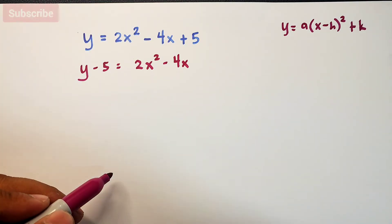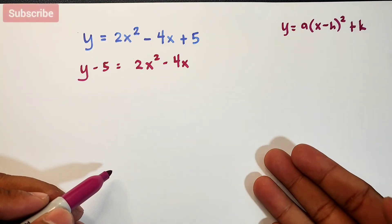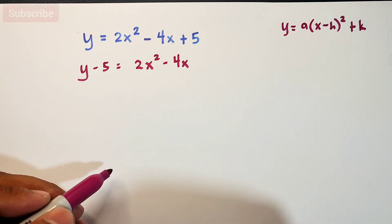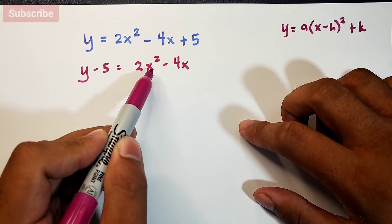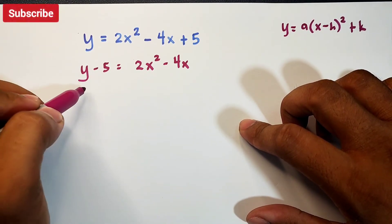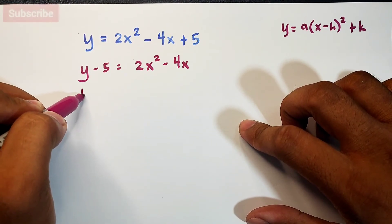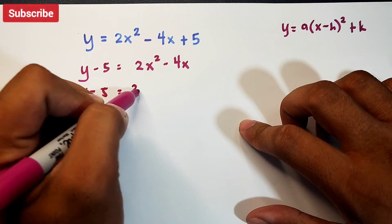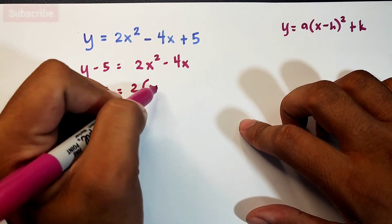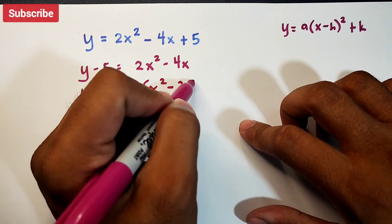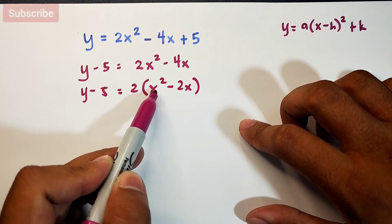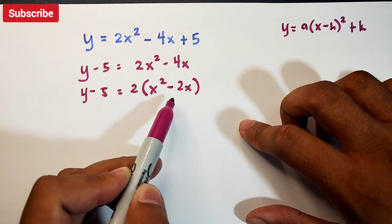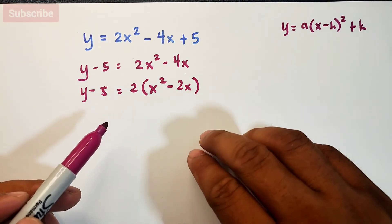You might think we'll do completing the square now. But before completing the square, there's a common factor in our two terms. They have a GCF. We can factor out 2. It becomes y minus 5 equals 2 times x squared minus 2x. 2x squared divided by 2 is x squared. Negative 4x divided by 2 is negative 2x.